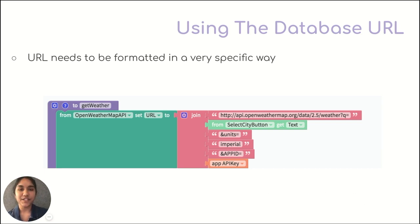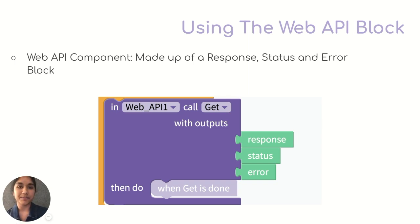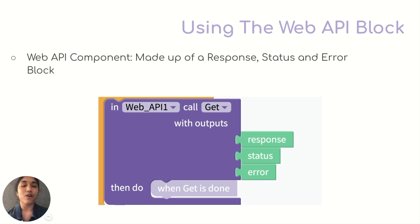In the next videos, we'll be showing you examples of this. You want to store the information that you got from the website and use it in your app. You can do this by using the call get block from the Web API drawer. The Web API component is made up of response, status, and error. But you really only need to worry about response right now, because that's where all the data that you receive from the website is stored.